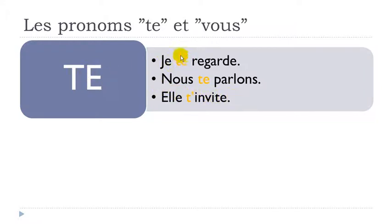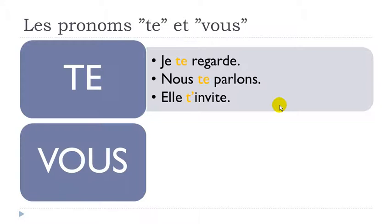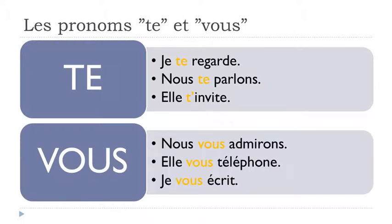So remember the pronouns must be placed before the verb, and it will be exactly the same thing for vous. So let's have a few examples: nous vous admirons — we admire you. Remember it must be before the verb. Nous vous admirons — I will make this little liaison: nous vous admirons.